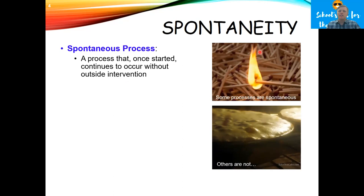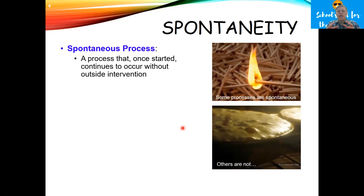For example, matches will spontaneously burn. That doesn't mean that a bunch of matches in a bowl will just randomly catch fire. What that means is if I throw a lit match into a bowl of matches, those matches will continue to burn without me driving the reaction. A cake, on the other hand, is a process that can be either non-spontaneous or spontaneous. If I mix all the ingredients of a cake together and leave them on the counter, they will never turn into a cake. But if I put that cake batter in a pan and into the oven, the heat will cause the cake to bake. So at a higher temperature this cake bakes spontaneously; at a lower temperature, it doesn't.